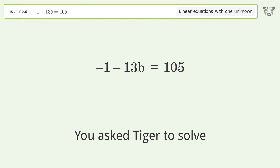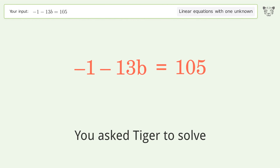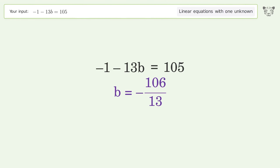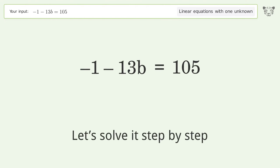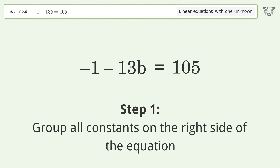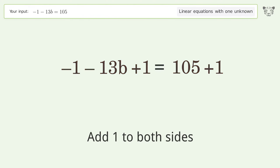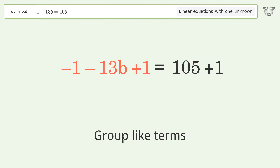We ask Tiger to solve this — it deals with linear equations with one unknown. The final result is b equals negative 106 over 13. Let's solve it step by step. Group all constants on the right side of the equation. Add 1 to both sides, then group like terms.